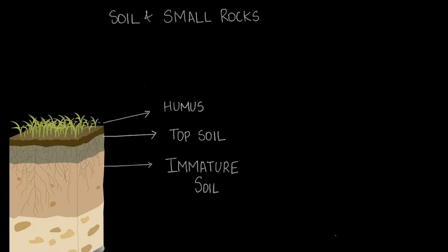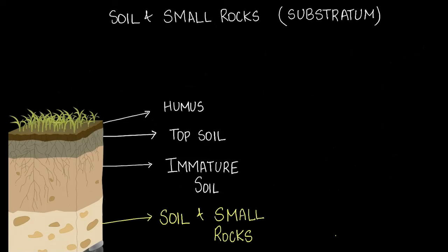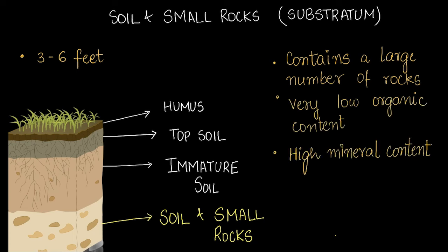The next layer contains soil and small rocks and is also called the substratum. This layer is 3 to 6 feet deep. It contains a larger number of rocks and the size of the rocks is also larger. It has very low organic content and high mineral content, so plants can't grow much in this layer.